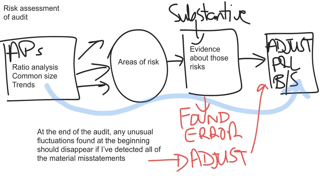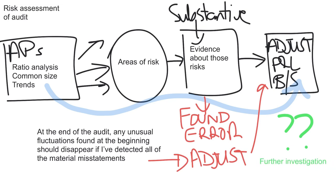At the end of the audit, any unusual fluctuations found at the beginning should disappear if I've detected all of the misstatements. If you still find unusual fluctuations, you need to do further investigation — because that may mean there is an undetected misstatement. This analytical procedure run at the very end on the adjusted financial statements serves as my last line of defense to determine if there are any undetected material misstatements.